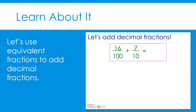Let's try one more example — adding sixteen-hundredths plus seven-tenths using equivalent fractions. First, let's estimate. Will our sum be less than one-half, equal to one-half, or greater than one-half? Sixteen-hundredths is pretty small and definitely less than one-half. However, seven-tenths is already greater than one-half without adding anything to it. So our sum has to be greater than one-half.